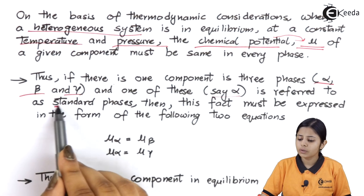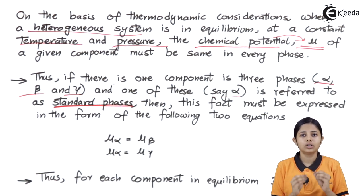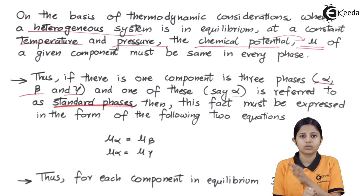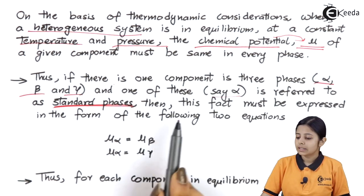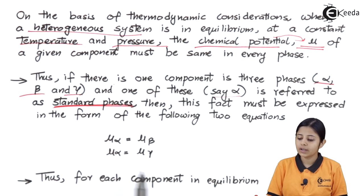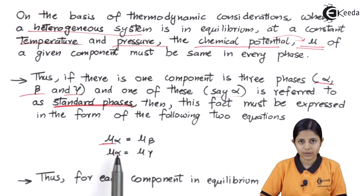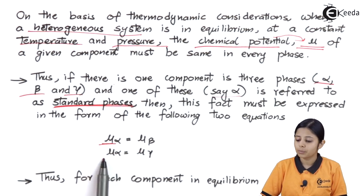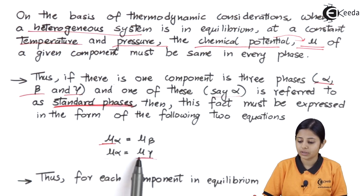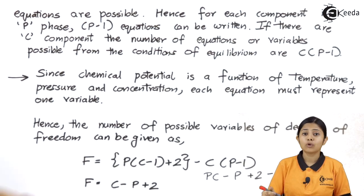This fact can be expressed as: mu alpha equals mu beta, and mu alpha equals mu gamma. Here mu is the chemical potential — chemical potential of alpha phase equals chemical potential of beta phase, and chemical potential of alpha phase also equals chemical potential of gamma phase. This is because alpha is the phase connecting both beta and gamma. For example, taking solid, liquid, and gas: liquid can be considered the standard phase because from liquid I can turn into solid or into gas. Thus, for each component, we have two equations, giving P−1 equations per component.